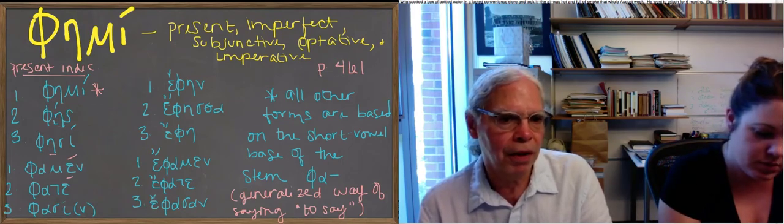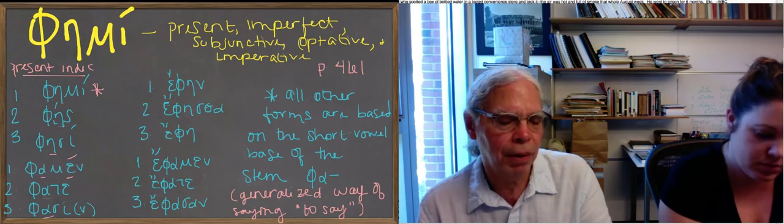And we also see it in the imperfect fen, fasta, fen, famen, fasate, fasan.